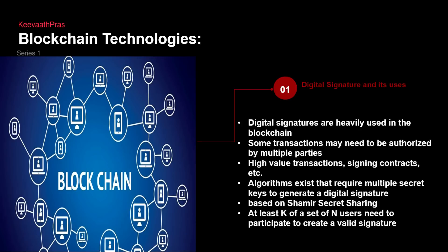Some transactions may be authorized by multiple parties — like a bank manager, or some banks will have more than one manager to supervise high-value transactions and signing contracts. There exists an algorithm that generates multiple keys in order to generate a digital signature. What you see is not just a normal signature — it has an algorithm behind it and some matching criteria. At least k of a set of n users have to participate in order to create a valid signature.